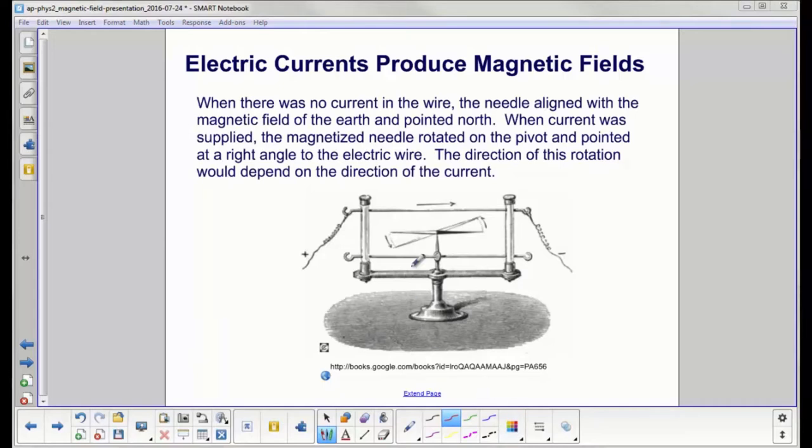When there was no current in the wire, the magnetized needle pointed north. However, when current was supplied, the magnetized needle rotated on the pivot and pointed at a right angle to the electric wire. If you switch the direction of the current, the needle would spin in the opposite direction and would again be at a right angle to the wire.